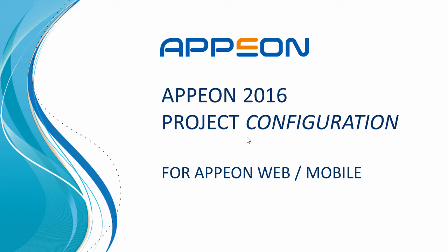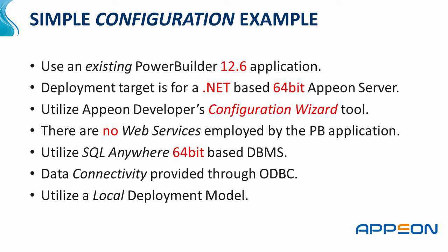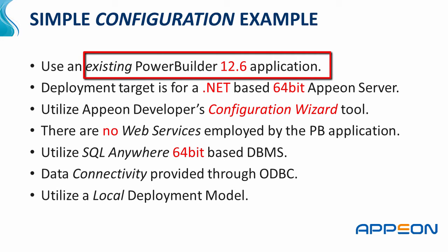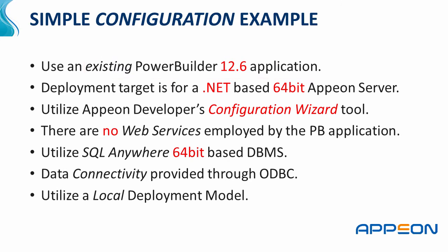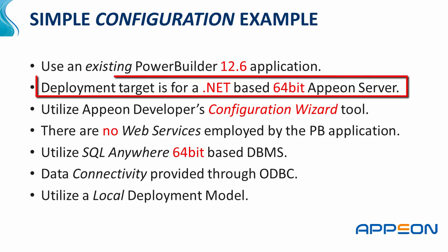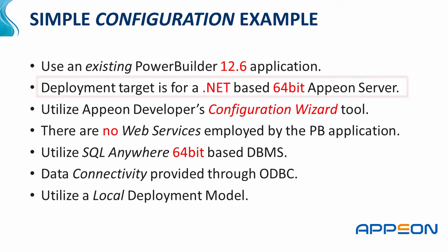Hello and welcome to the Appeon 2016 Product Suite Project Configuration Tutorial for Appeon Web, Mobile, or both, known as Appeon Universal. For this particular example tutorial, we're going to use a very simple configuration example. We have an existing PowerBuilder 12.6 application, and a deployment target for this particular machine, which I'm running under Windows 10, where I've installed a 64-bit .NET version of Appeon Server.